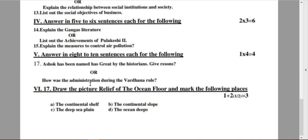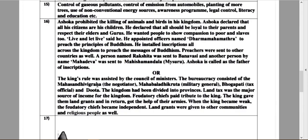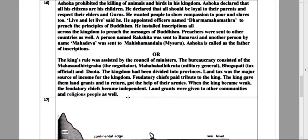Let's move on to next four-mark question, choice question: How was the administration during the Vardhana rule? The king's rule was assisted by the council of ministers. The bureaucracy consisted of the Mahasandivigraha, the negotiator. The kingdom had been divided into provinces. Land tax was the major source of income for the kingdom. Fedatory chiefs paid tribute to the king. The king gave them land grants and in return, got the help of their armies. When the king became weak, the fedatory chiefs become independent. Land grants were given to the other communities and religious people as well.